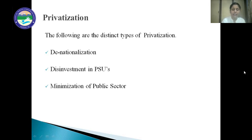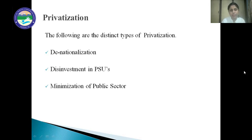Next is minimization of public sector, which is the third and last type of privatization. When the government makes policies that encourage and promote private enterprises to enter the market and run their business with minimum restrictions. In 1991, through de-reservation and de-licensing, the government encouraged such privatization. The number of industries reserved for the public sector has been reduced from 17 to 2, namely the railway industry and atomic and defense energy. Thus, all the market is open for private players.